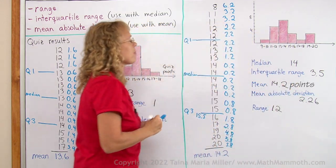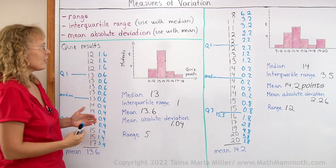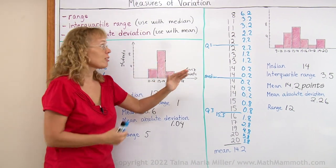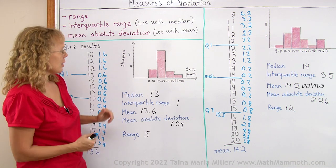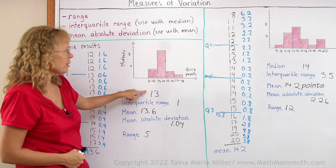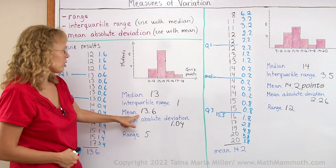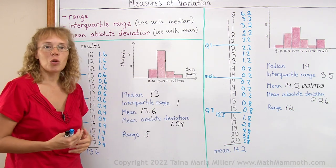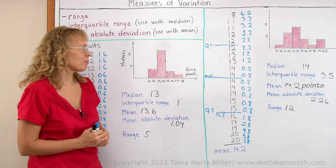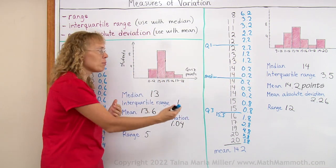Alright, now our calculations are ready and we can now compare not just the graphs but also the numbers. And in these two groups, if you look at the median, the median is less here than there. The mean also is less here than there. So on average that group did better on the test because the mean and median both are a little bit more.